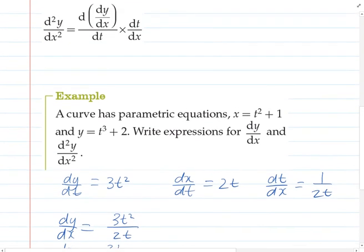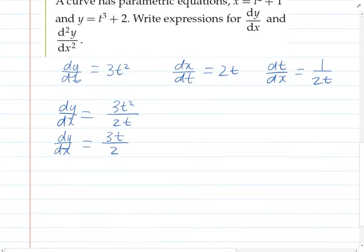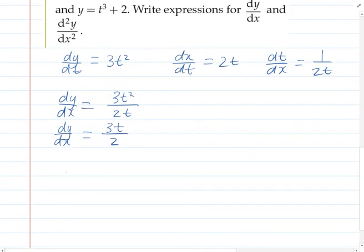Okay, so using this formula up here, we're going to find the second derivative. To do that, we have to differentiate dy/dx, so that means differentiating this term here, and so that's going to be 3 over 2.